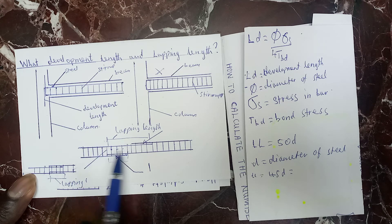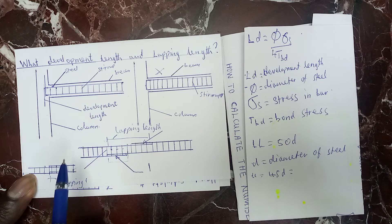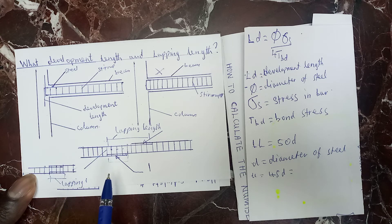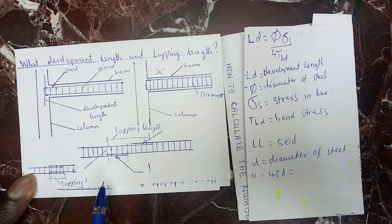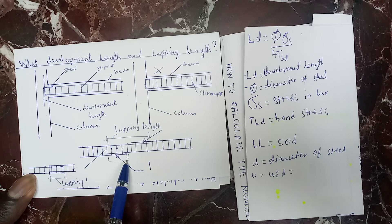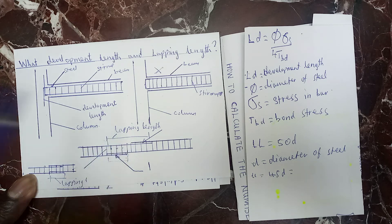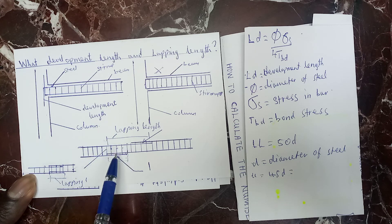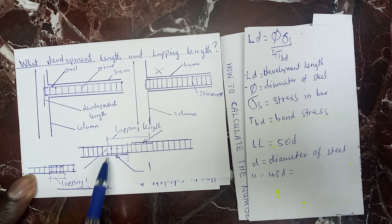The steel rod is not long enough — maybe you want to build a house that is 20 meters in height, you cannot find a rod that is 20 meters long. So we need this lapping length so that we can safely transfer our load from top to bottom, and transfer the stress from one bar to another.